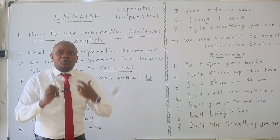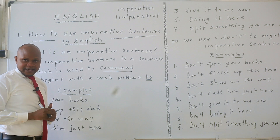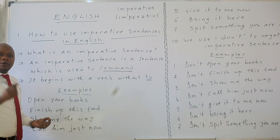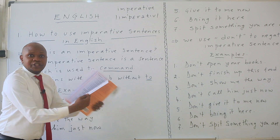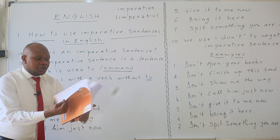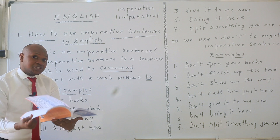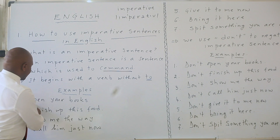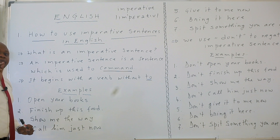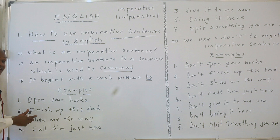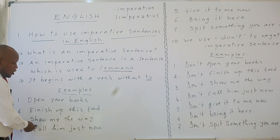I am obliging you to do an action — that is to oblige, to command. For example, I can say: open your books. I am commanding. If I say 'open your books,' which means that I want you to open them. If you open the book, the next action that you are going to do is reading. Then if I say this, I am commanding you. Finish up this food — I command you to finish up the food.